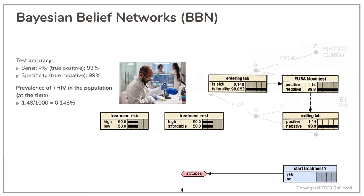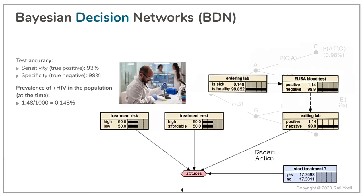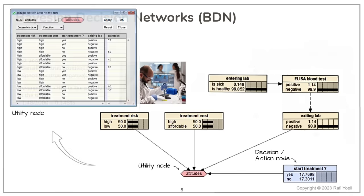With the introduction of a special decision node, our Bayesian belief network has turned into a Bayesian decision network. We have also added another new node, which is not mandatory, but often used in decision networks. This is the utility node. While the decision node is very similar internally to other nodes in the network, the utility node is unique as we shall see shortly.